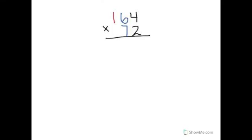The first step in partial product multiplication is to line up the numbers you're multiplying vertically. It also helps to have the numbers with the fewest digits at the bottom. I color coded my digits: red for the hundreds place, blue for the tens place, and black for the ones place.